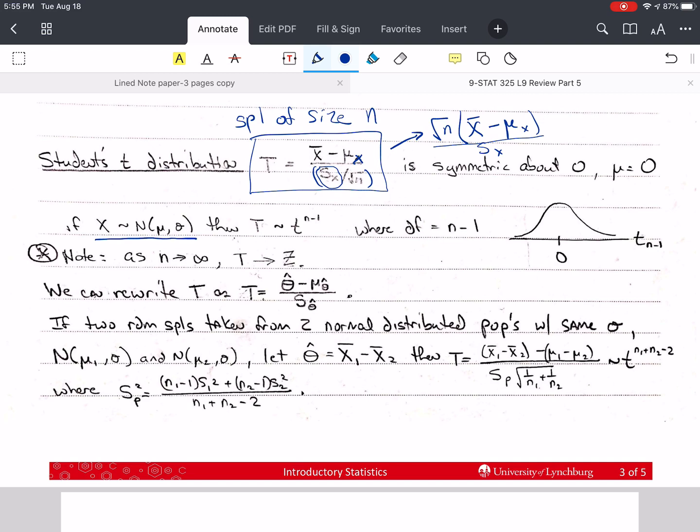We are now estimating not only mu using x-bar, but we also have to estimate sigma using s, the sample standard deviation. So this t then has a t-distribution with n minus 1 degrees of freedom. So df is degrees of freedom.